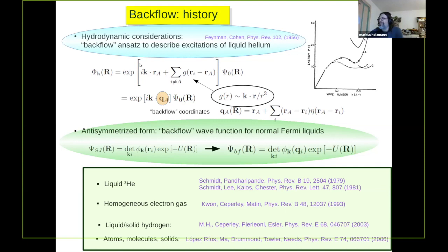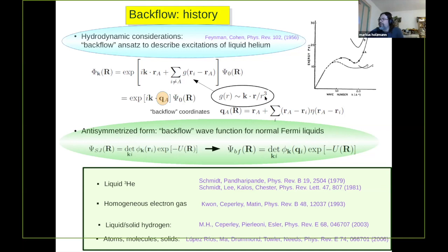Backflow was introduced historically by Feynman to describe the excitation spectrum of liquid helium and the famous phonon-roton spectrum. If you have an atom moving through a fluid, hydrodynamic considerations say there should be a backflow reaction in the liquid due to the disturbance of the flux of this atom. The backflow has a characteristic asymptotic form at long distances — proportional to momentum dotted with the distance — so you can build into the coordinate ansatz a kind of quasi-coordinate that is the same plane wave but with modified coordinates.